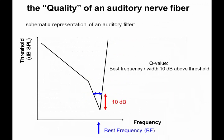Just to schematically show what's going on: we've got this receptive field as a function of frequency and threshold — a real threshold curve, simplified so it will respond everywhere within and not outside. We have to go up to a certain frequency and amplitude to reach the threshold — that's why it's called the frequency threshold curve. This illustrates what the Q10dB value is, which characterizes any filter in engineering and audiology. The Q10dB value is obtained by dividing the best frequency by the bandwidth 10 dB above the threshold.